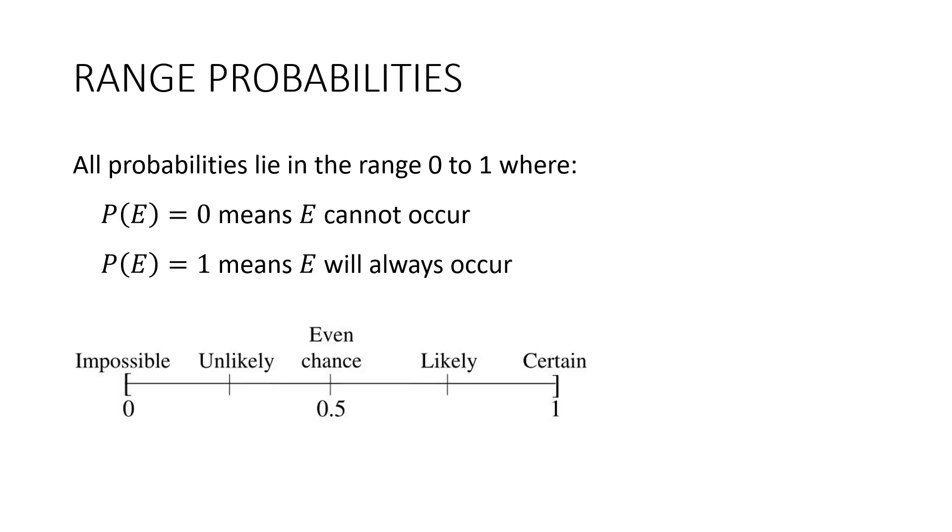Which brings us to the range of probabilities. All probabilities will lie between zero and one, where zero means E cannot occur. That's like the green counters example. And one means E will always occur. That's like the primary colors example.